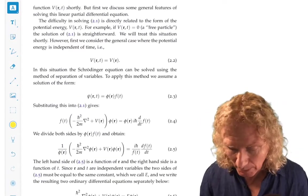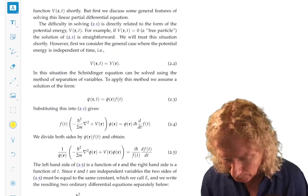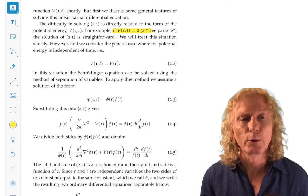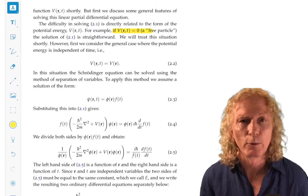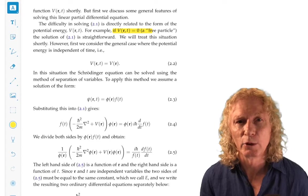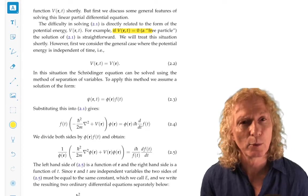Now, the easiest possible potential energy that we could look at is when the potential energy is zero. And that's called a free particle, free, no forces on it. We're going to look at that situation in some detail. It's a very important situation.